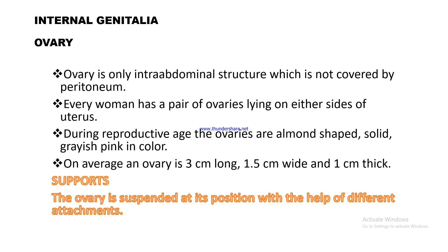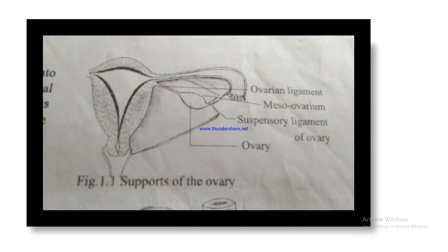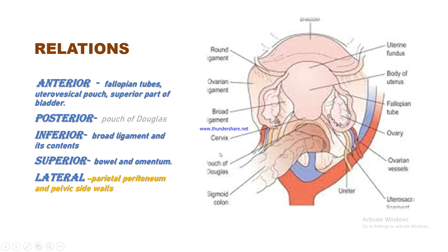Supports of the ovary: the ovary is suspended at its position with the help of different attachments. These include the ovarian ligament, the meso-ovarium — which is attached between the ovary and the fallopian tube and is a condensation of the mesothelium — and the suspensory ligament of the ovary.